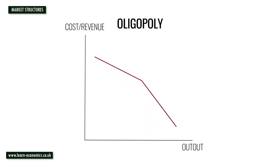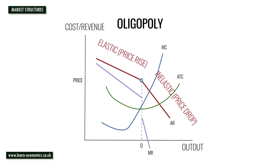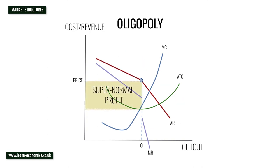The oligopolist faces two demand scenarios: firstly, when demand is elastic to a price increase, and secondly, when demand is inelastic to a price drop. Profit maximisation occurs where MC cuts MR, which is the vertical section between A and B. The level of profit depends upon the position of the ATC curve.